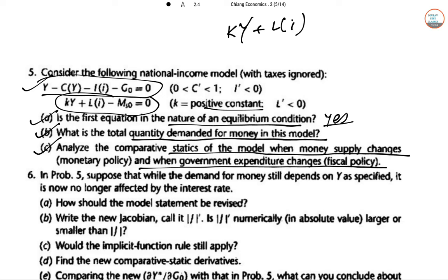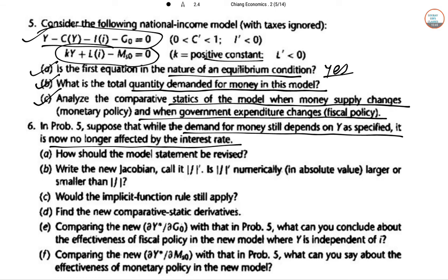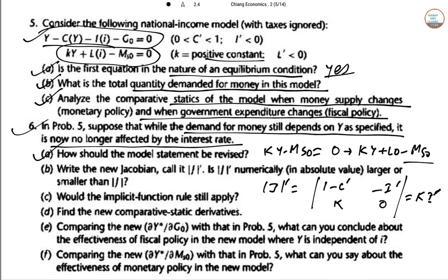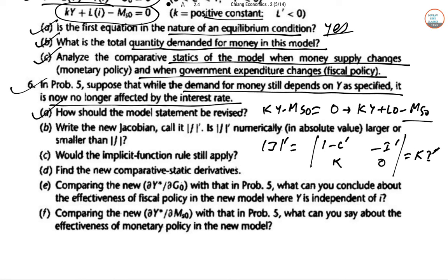Question 6: in problem 5, suppose that while the demand function still depends on Y, it is no longer affected by the interest rate. The first equation stands, but the second equation should be changed to k·Y + L₀ − M_s = 0. The new Jacobian J' = [1−C', −I'; k, 0], giving k·I', which is numerically smaller than J. The implicit function theorem still applies since it is non-zero.